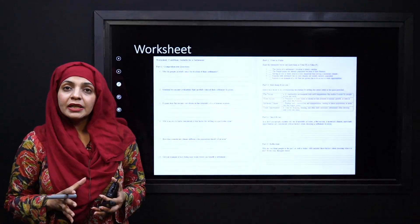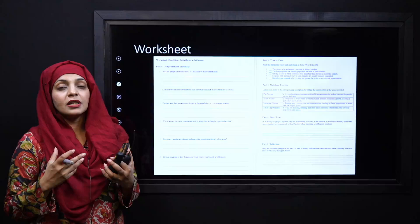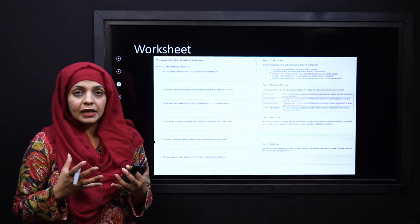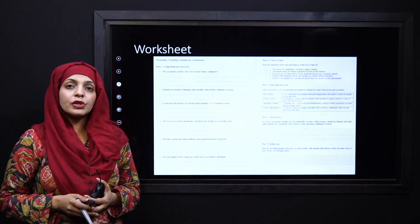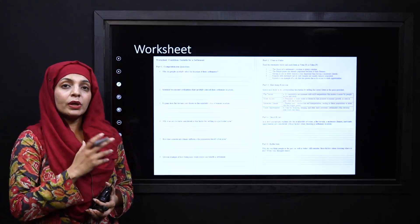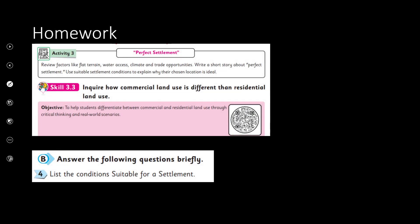These are the conditions that are very important for a settlement to set up. For practice, you can download a worksheet from the description box below this video, or get it in print form from your teacher. Pause the video and quickly finish the worksheet. For homework, you will complete activity number 3 and skill 3.3 in your books. You will scan the QR code to access the skill sheet, and you will also complete question number 4 from exercise B, which is a short question.